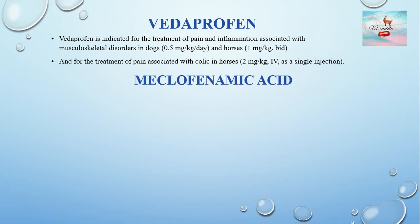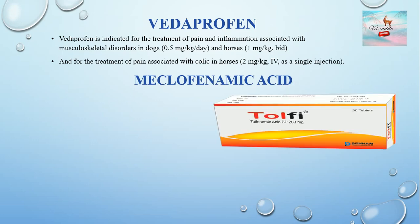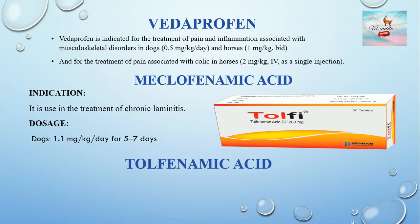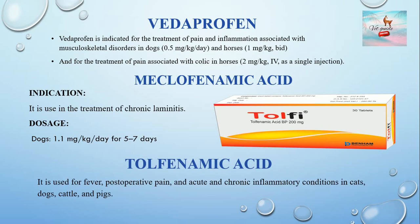Meclofenamic acid is used in the treatment of chronic laminitis. Its dose rate in dogs is 1.1 mg/kg per day for up to 5–7 days. Tolfenamic acid is used for fever, postoperative pain, and acute and chronic inflammatory conditions in cats, dogs, cattle, and pigs.